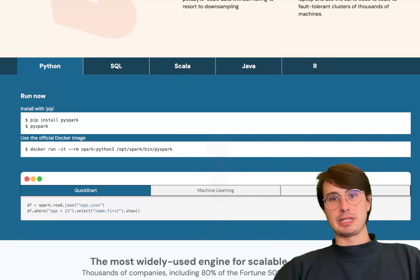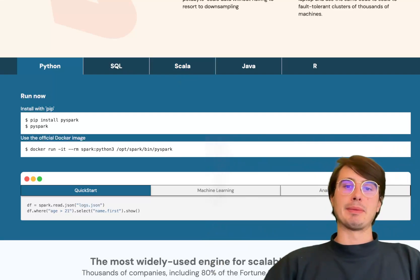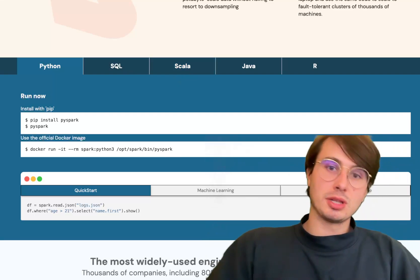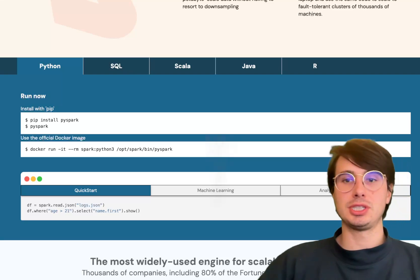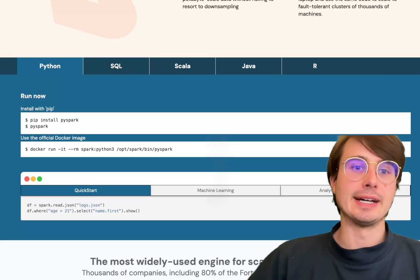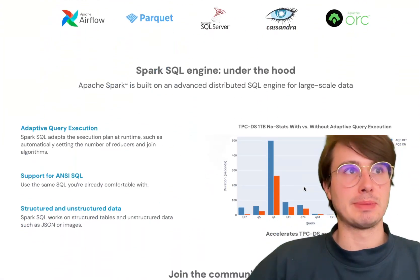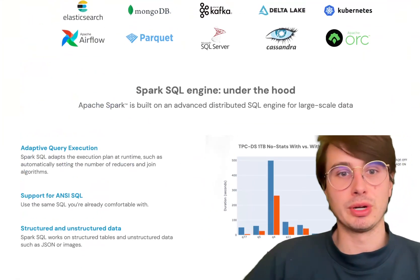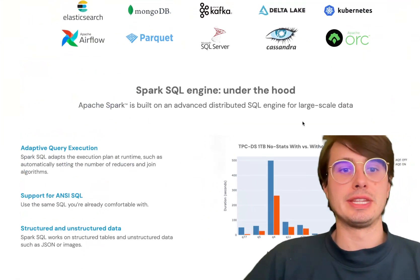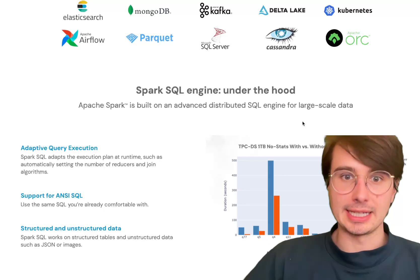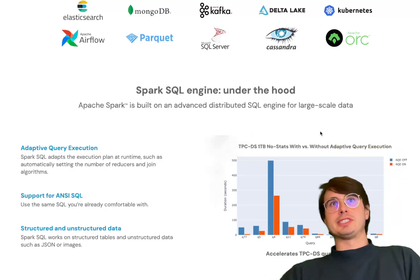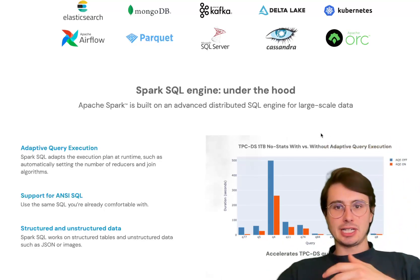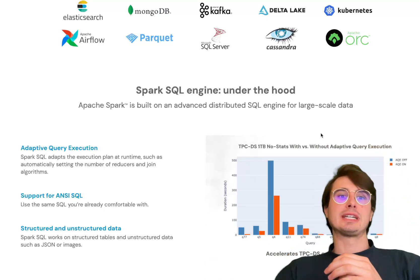Spark also integrates really well with centralized monitoring tools like Prometheus, and there's the Spark Web UI for in-tool performance tracking and resource usage. For best use cases, Spark is well suited for batch and hybrid processing. I wouldn't say it's the best tool for real-time data processing, but it's really good for batch data processing, historical data processing, ETL pipelines, or BI workloads — like refreshing data once a week.